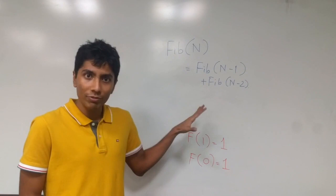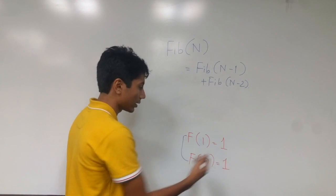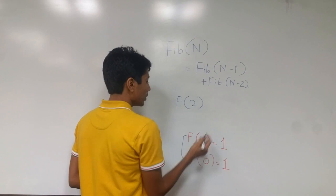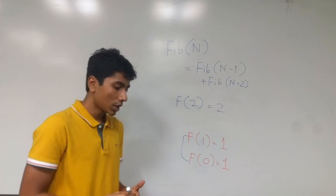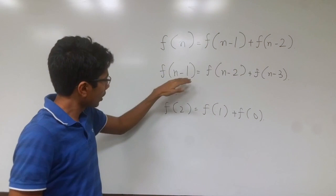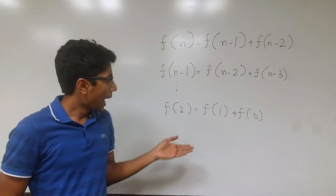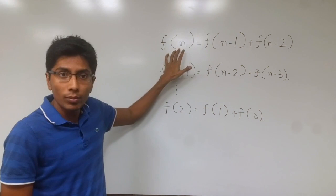There's a link, and this is the equation for the Fibonacci sequence, and this is the base condition that we have. For f(1) and f(0), they're equal to 1. So taking an example, what is f(2)? That's f(1) plus f(0), which will be equal to 2, and so on and so forth.